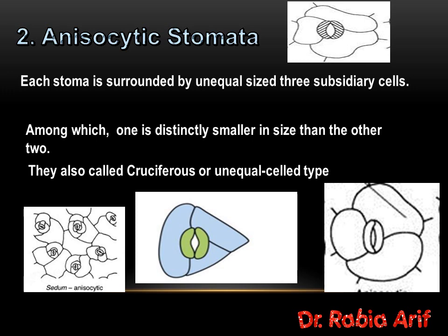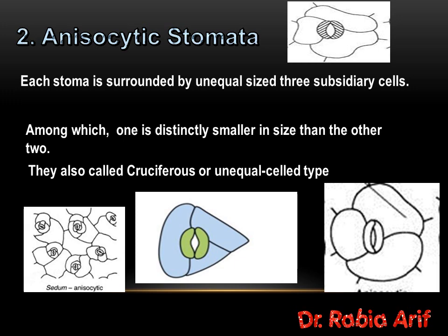The second type is the anisocytic stomata. As the word indicates, they are unequal-sized. These are stomata that are surrounded by three subsidiary cells of unequal size. Among these three cells, one is distinctly smaller in size than the other two, as you can see in the diagram. So they are unequal in size, but their number is fixed at three. They are also called cruciferous or the unequal cell type stomata.